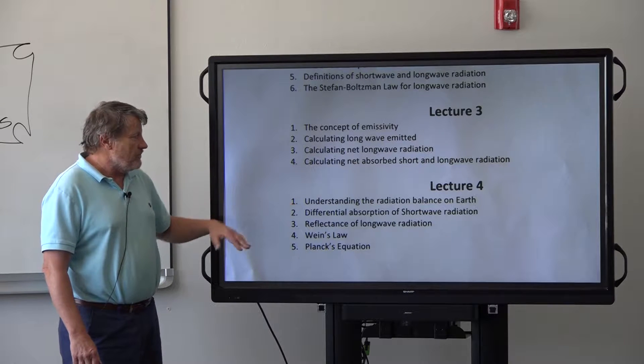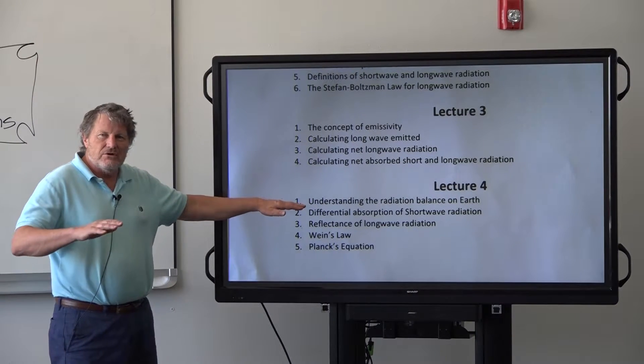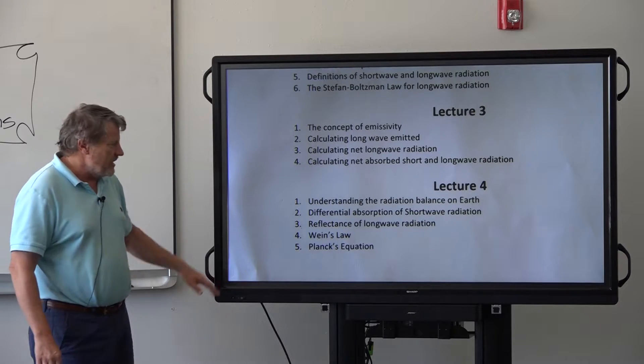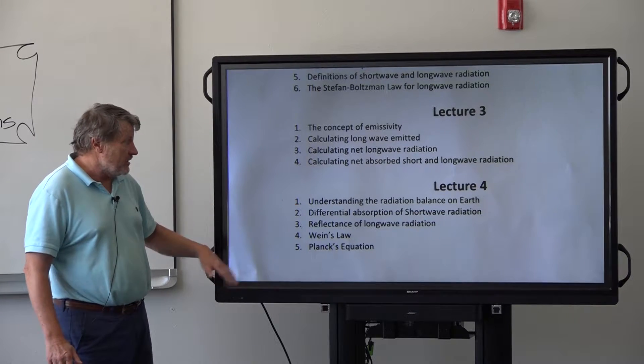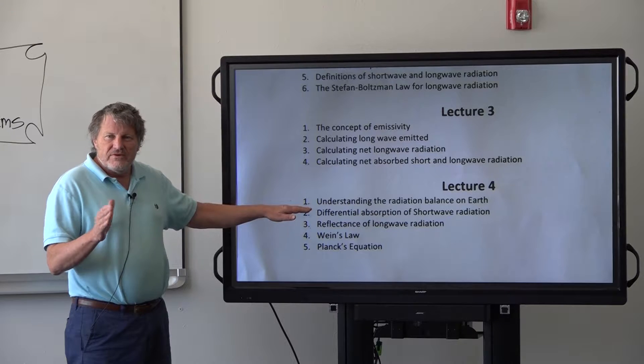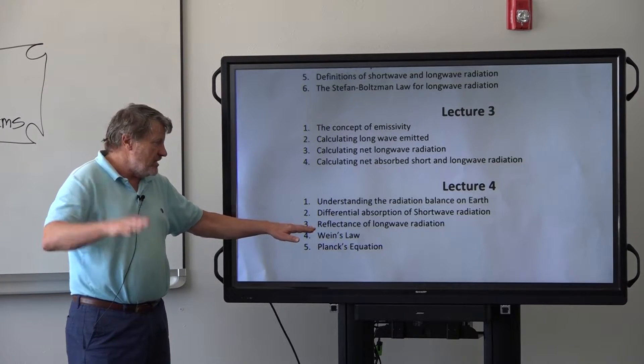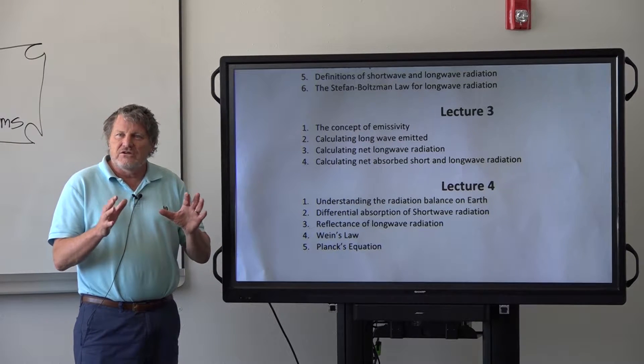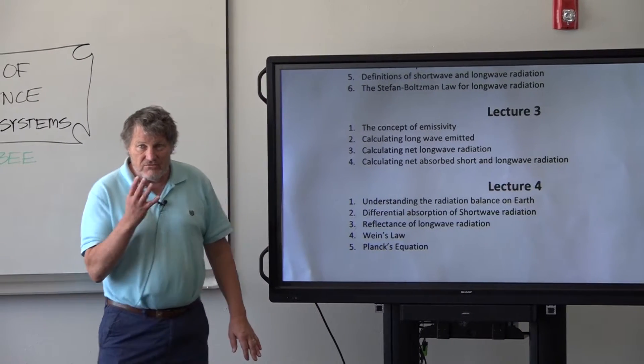Then we open lecture four. Applying energy balance principles to the planet Earth. This also gets into what is the energy balanced perfectly on the Earth or is the Earth slightly warming. This really helps you understand the challenge of accurately measuring small amounts of global warming. The best minds in the planet are working on this now. Then we get into differential absorption of short and longwave radiation. Not all the wavelengths are the same. Reflectance of longwave radiation. A tiny bit is reflected. And then two critical equations that apply to these types of radiation. One is Wien's law and the second one is Planck's law. That's the end of the fourth lecture.